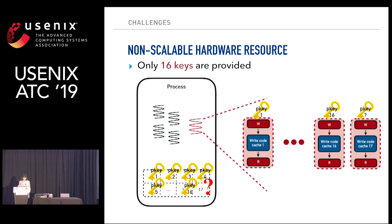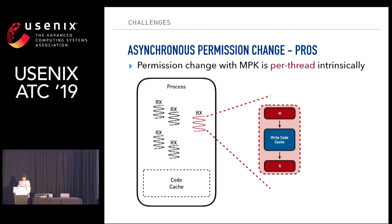The first challenge is non-scalable hardware resources, which naturally arises from hardware limitations. Intel provides a 32-bit PKRU register that only supports 16 protection keys. For example, if you assign a protection key for each code cache, just 16 code caches already exhaust the PKRU register. Regarding asynchronous permission change — because MPK permission change is thread-local by nature, this can actually be an advantage in some situations. In the JIT protection model, we want only the dedicated write thread to grant write permission to the code cache, and with MPK the other threads cannot write to the code cache because their permission is unchanged.